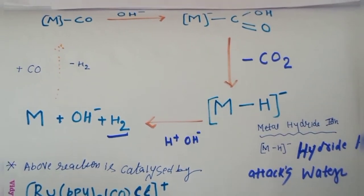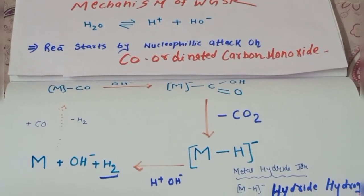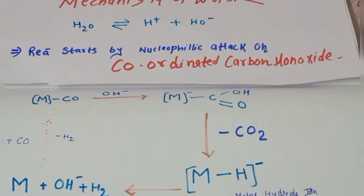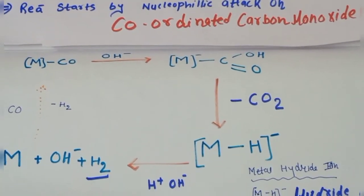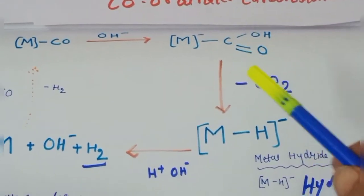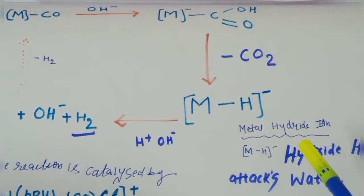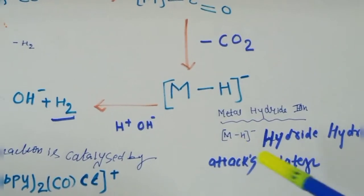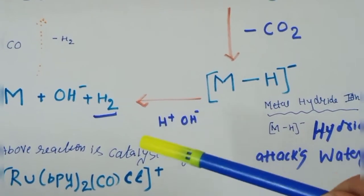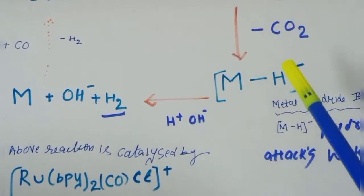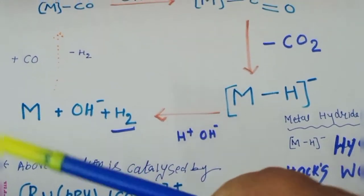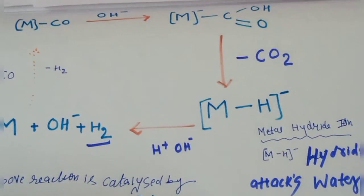This is all for your water gas shift reaction. You can take a screenshot of the mechanism. So this cycle you can make and either you can also write in your own words. This is our anionic carboxylic acid intermediate which is formed in the first point. In the second step, metal hydride ions are formed. Here our hydride hydrogen will attack the water. I have written in the form of H+ and OH-, and when H+ is available, this can easily form H2 and OH- will also be eliminated, and our metal will be freed so the cycle can continue.